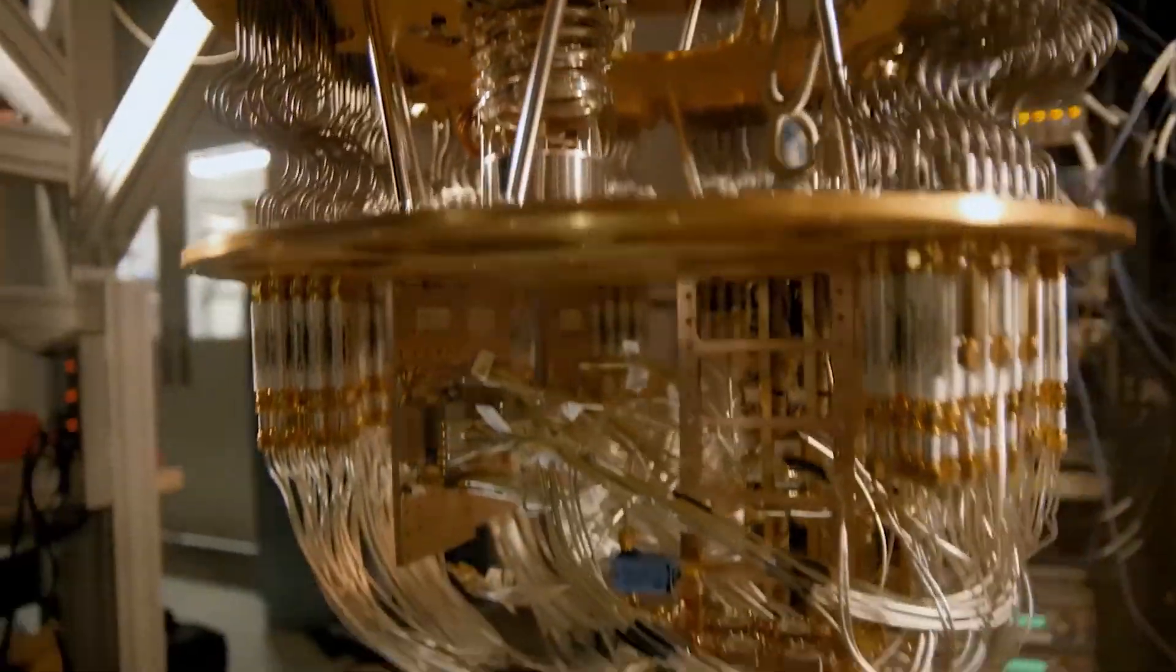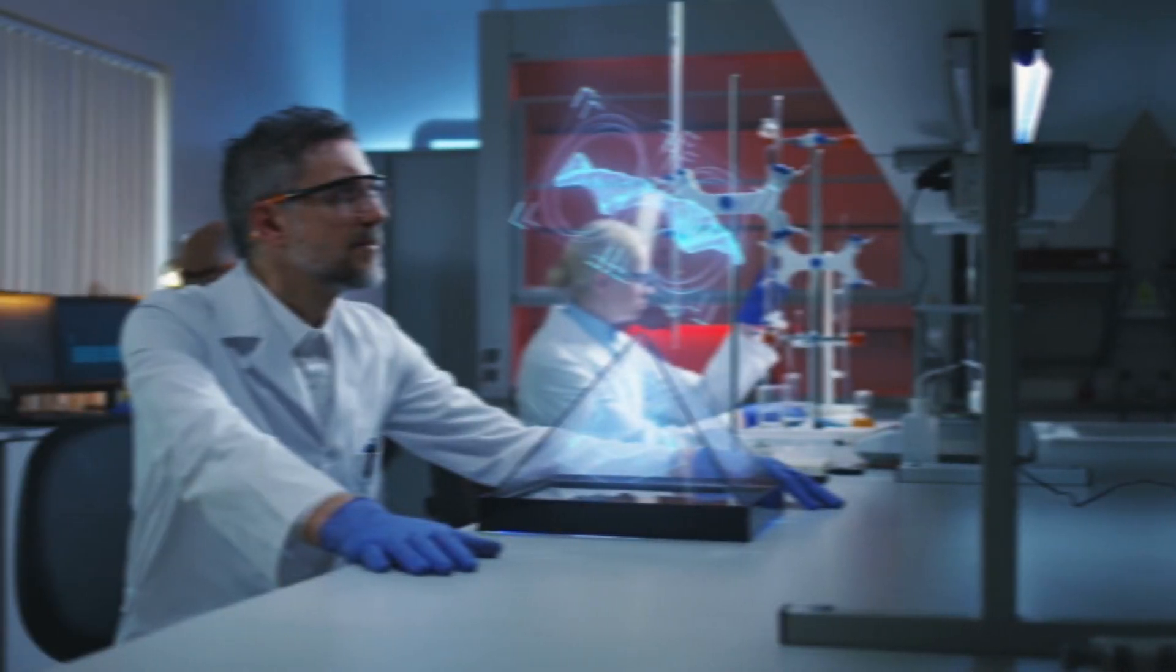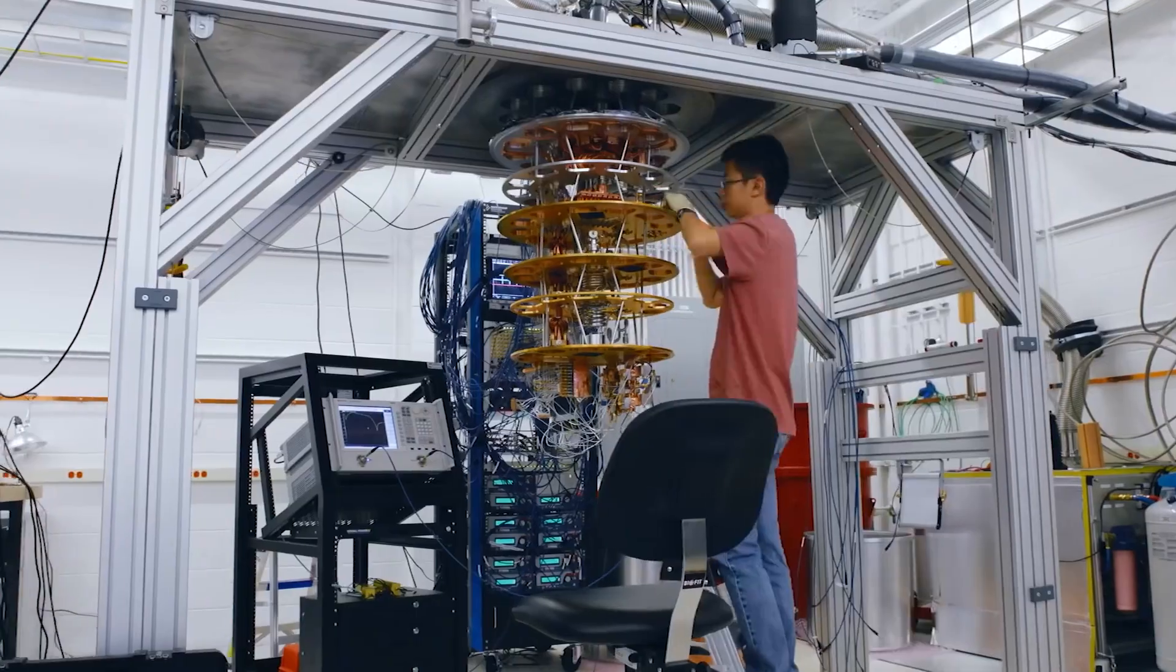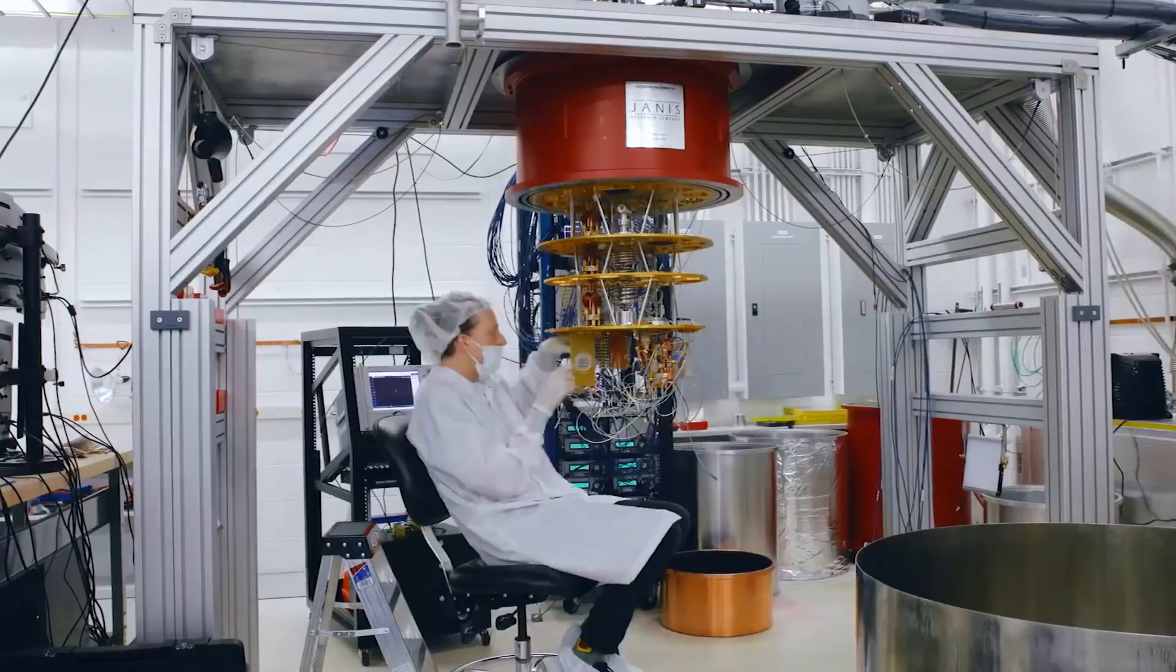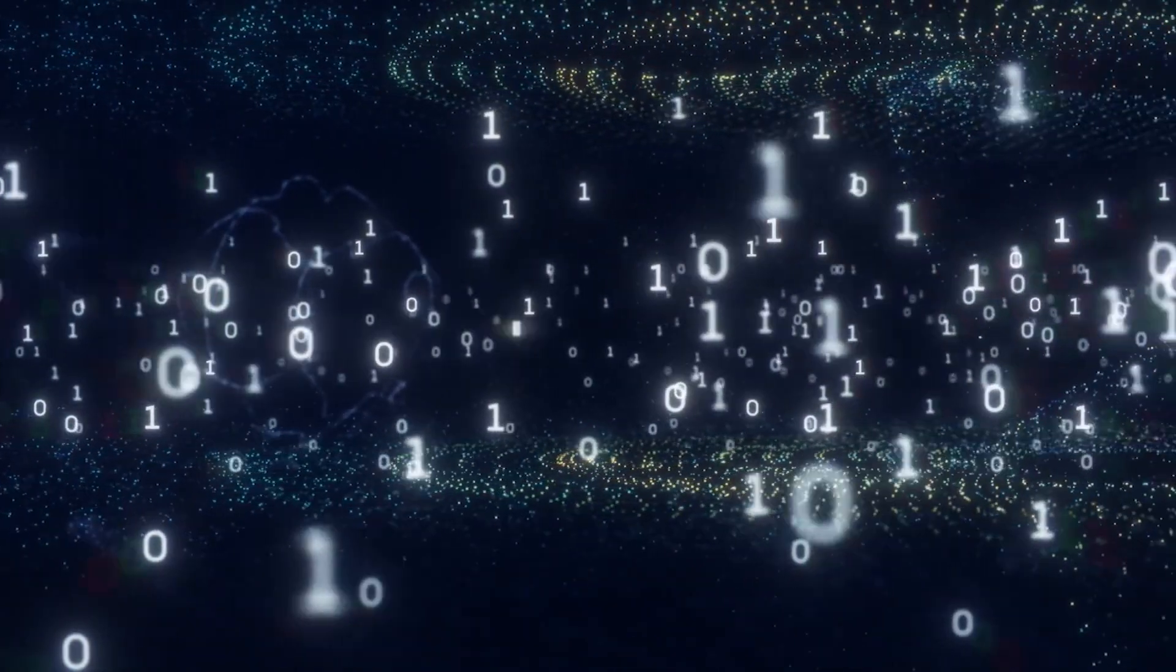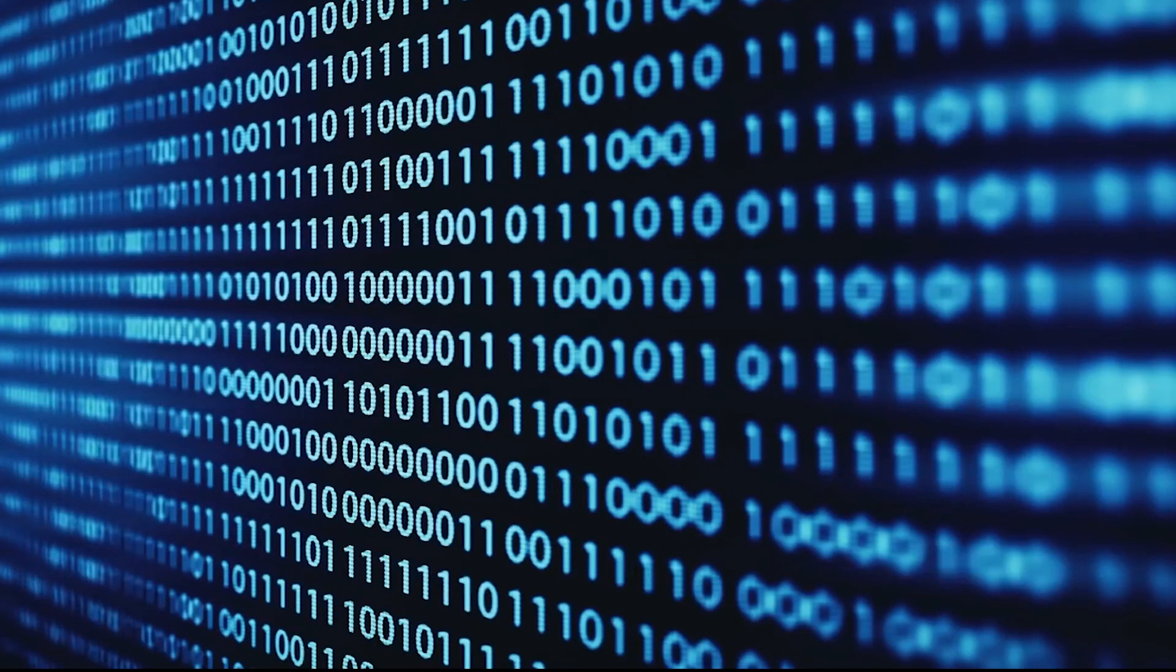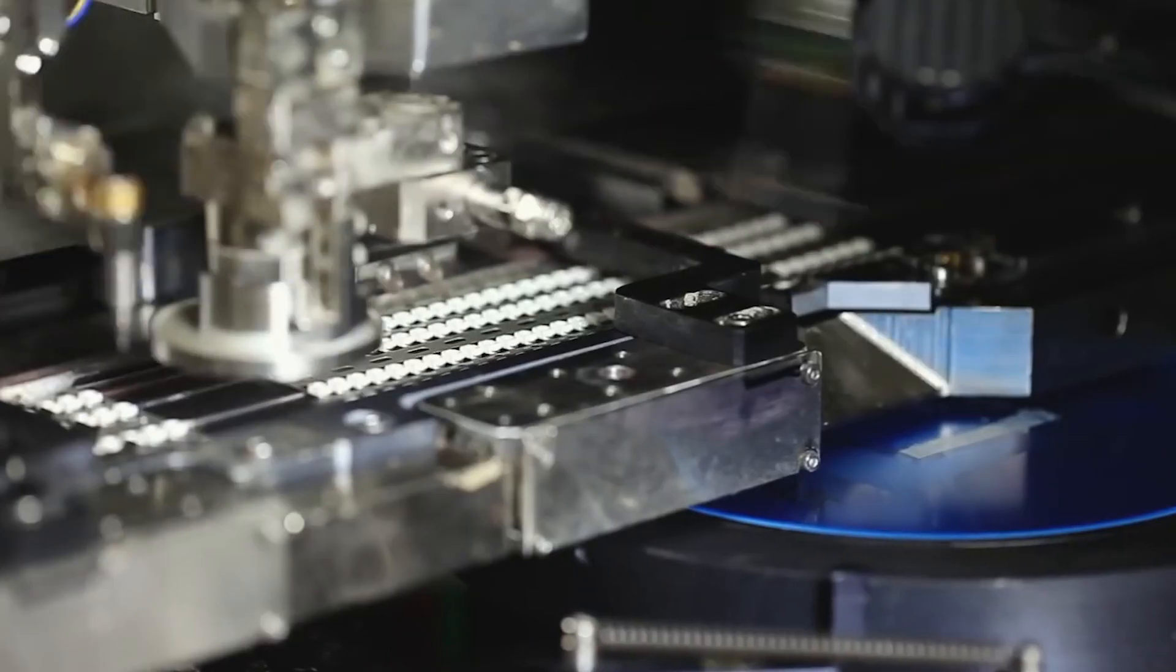When a quantum computer is put to work, it is expected to be subjected to some strict conditions for the computing process to actually work. For example, a quantum computer has to be cooled to near absolute zero to make functional quantum bits. Even with the right conditions provided, quantum bits are quick to undergo decoherence, which is a term for describing the loss of their entangled state.